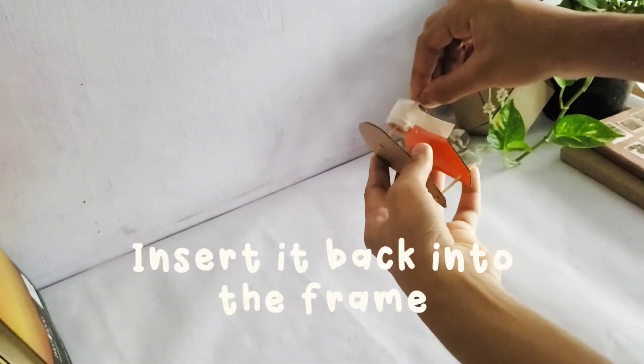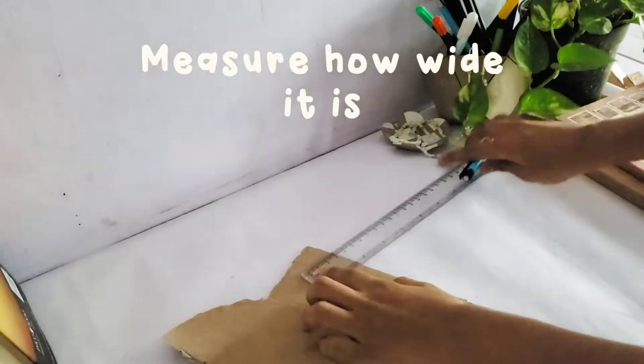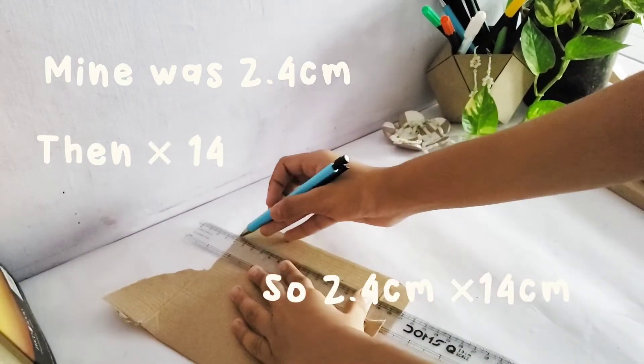Now, insert it back into the frame and make sure there's no gap between the cardboard and the tape. The width will be how wide it is and the breadth will be 14 cm.